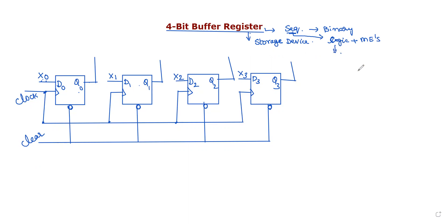A sequential circuit requires two types of components: logic gates such as AND gate, OR gate, and NOT gate, and memory elements. The basic memory element used is the flip-flop. A flip-flop is used to store a single bit of binary data. For a 4-bit register, 4 flip-flops are required to design this register.